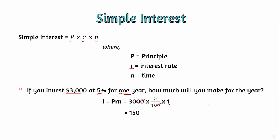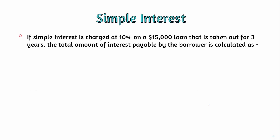Here is another example: if simple interest is charged at 10% on a $15,000 loan that is taken out for three years, the total amount of interest payable by the borrower is calculated as follows. The interest rate is 10%, the principal amount is $15,000, and the time is three years.